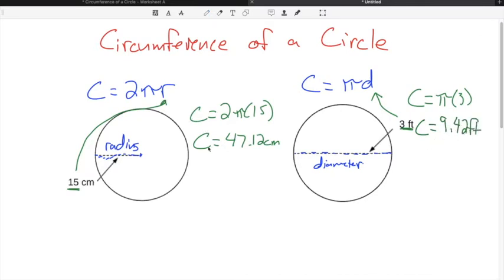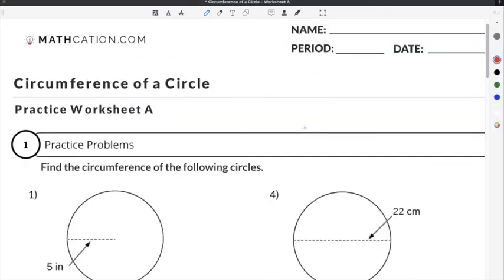The main difference in solving for what is the circumference of a circle is to use either the formula that involves radius or the formula that involves diameter based on the differences that the problems may give you. Let's do a couple practice problems on our circumference of a circle worksheet.